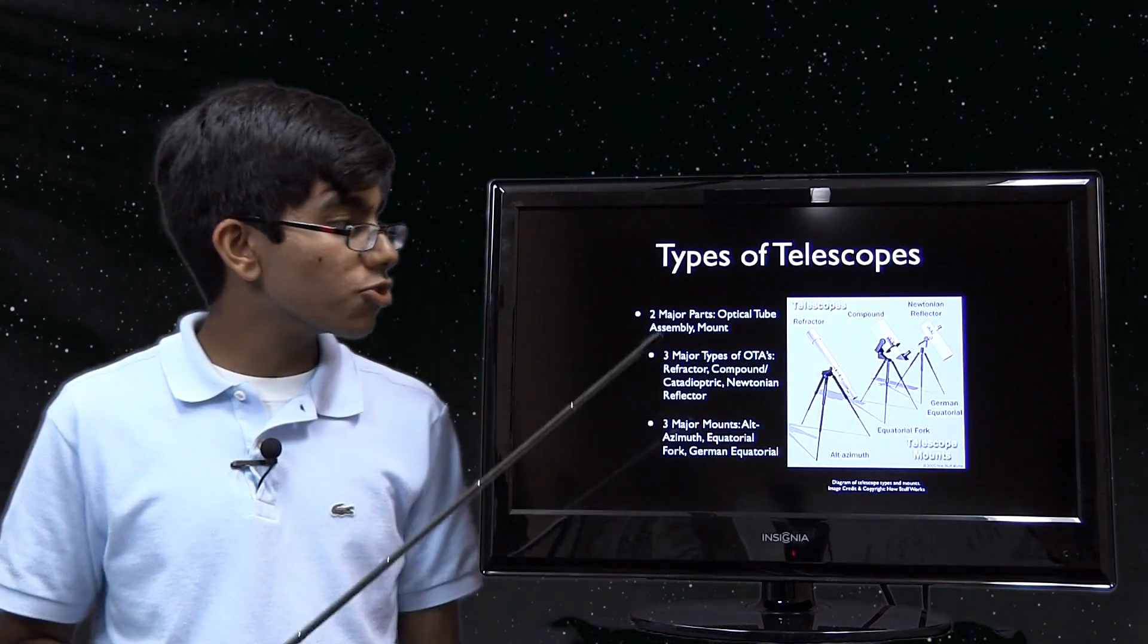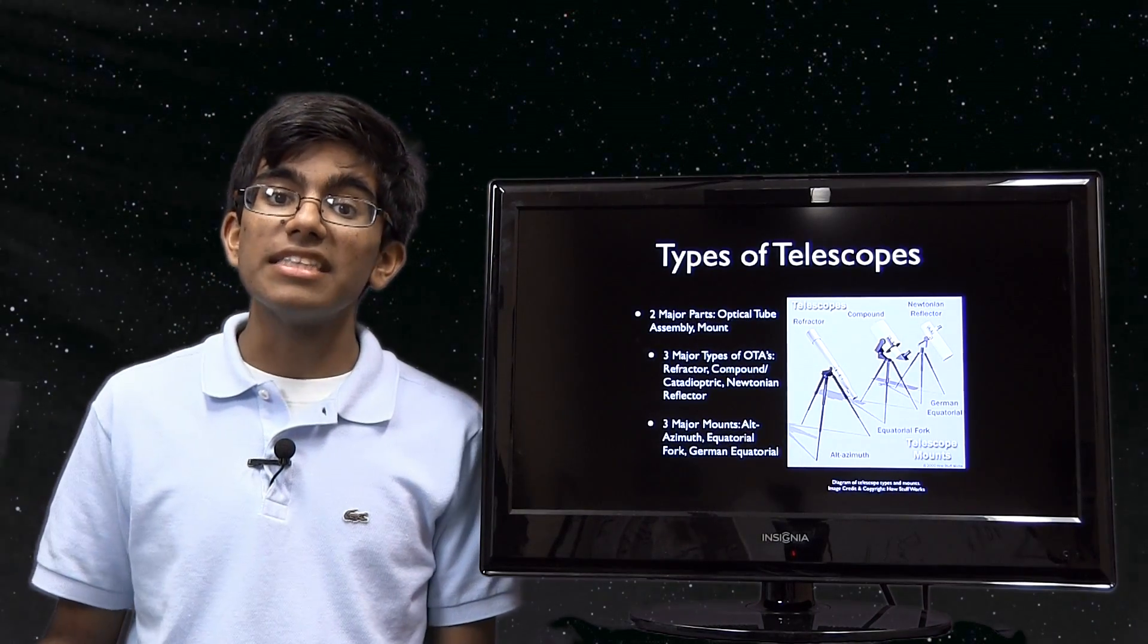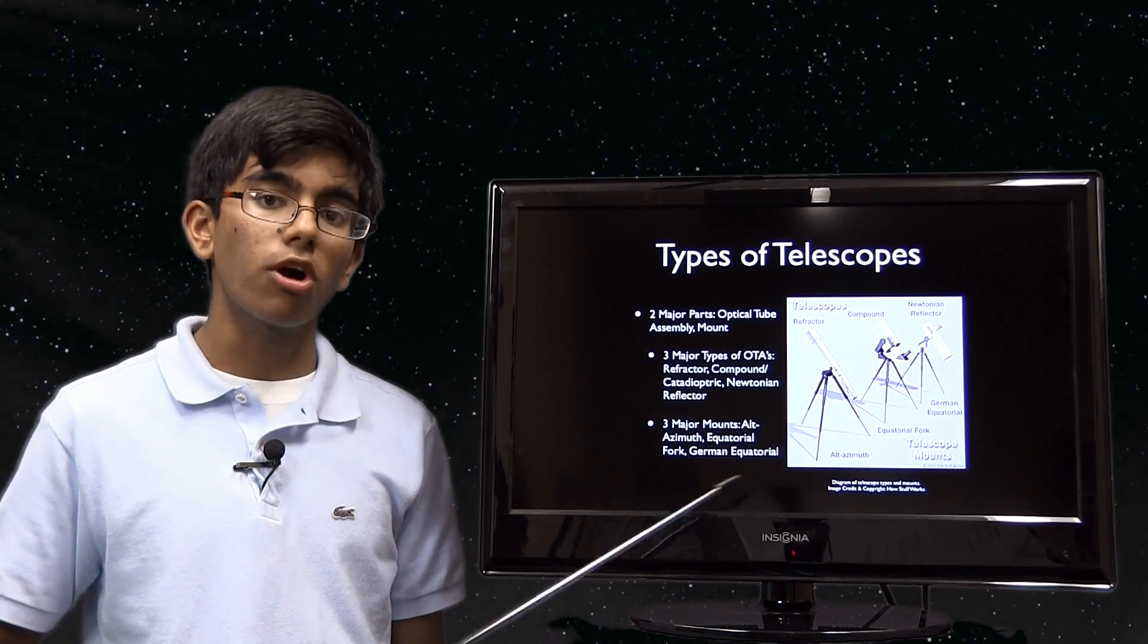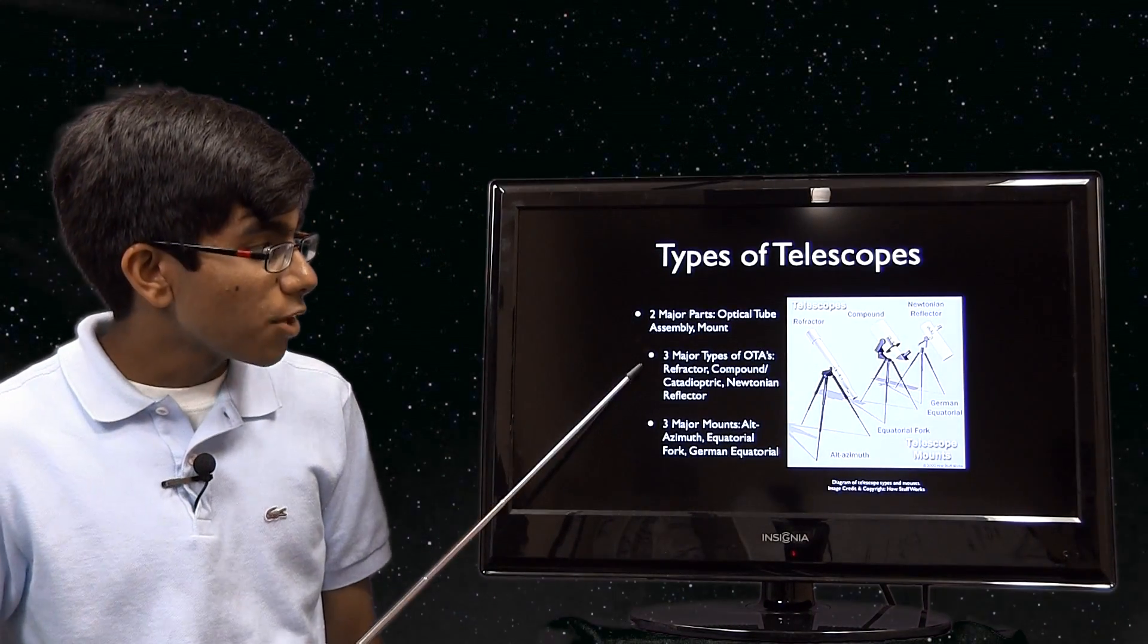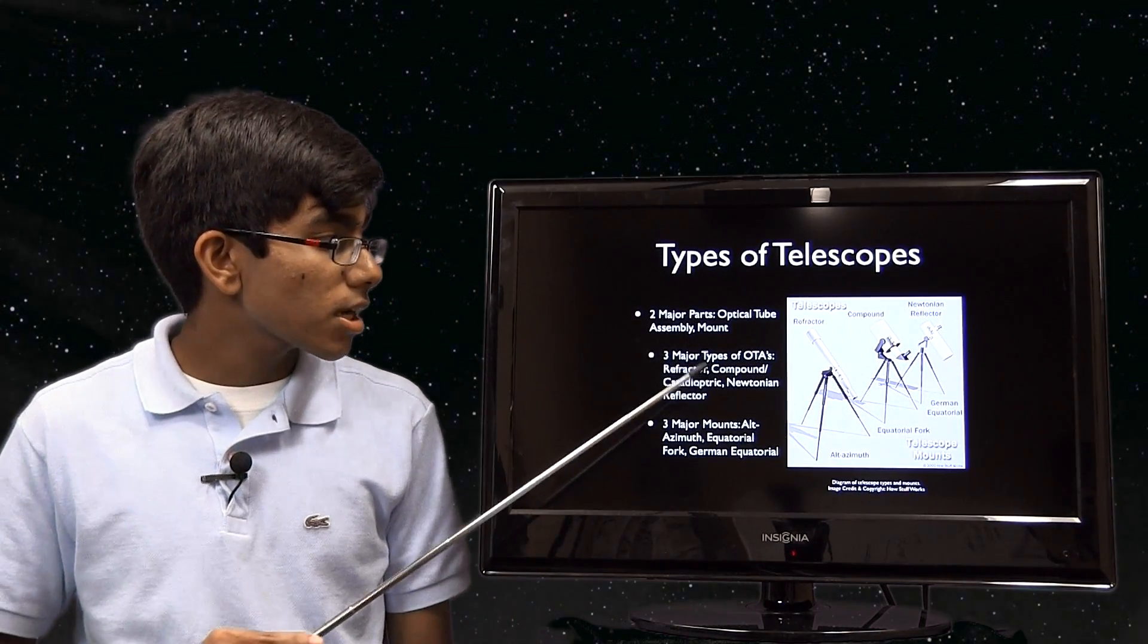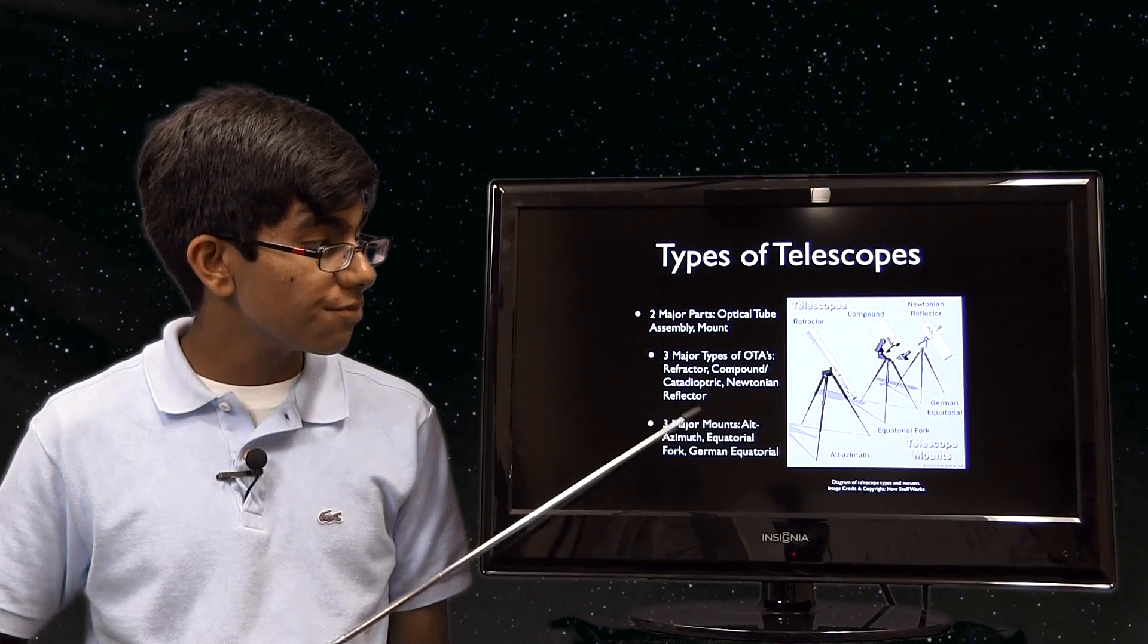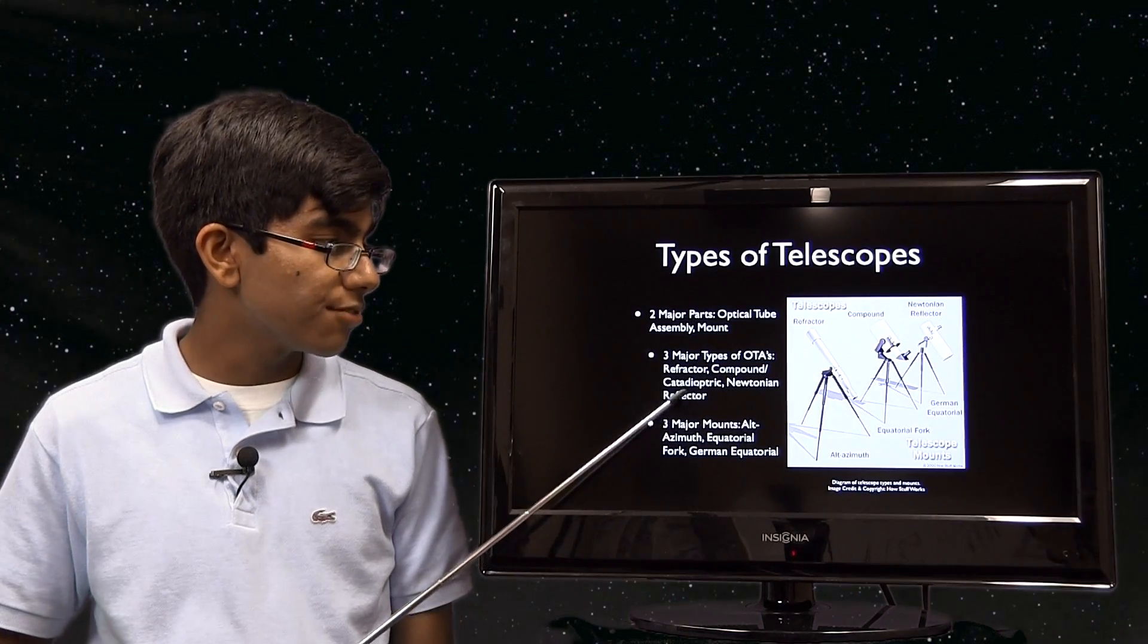So, the two major parts of the telescope: the optical tube assembly, which is what you see through, and the mount. The mount is what tracks an object or positions your telescope in the sky. There are three major types of optical tube assemblies, abbreviated OTA: refractors, compound or catadioptric systems, and Newtonian reflectors.